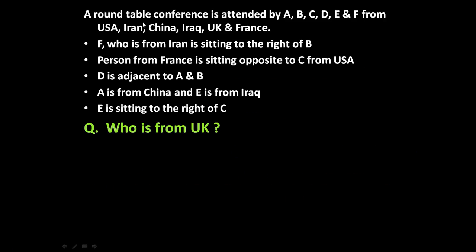The given problem is: a round table conference is attended by A, B, C, D, E and F from USA, Iran, China, Iraq, UK and France — six representatives from six countries. The given conditions are: F, who is from Iran, is sitting to the right of B. The person from France is sitting opposite to C from USA. D is adjacent to A and B. A is from China and E is from Iraq. E is sitting to the right of C. Then who is from UK?